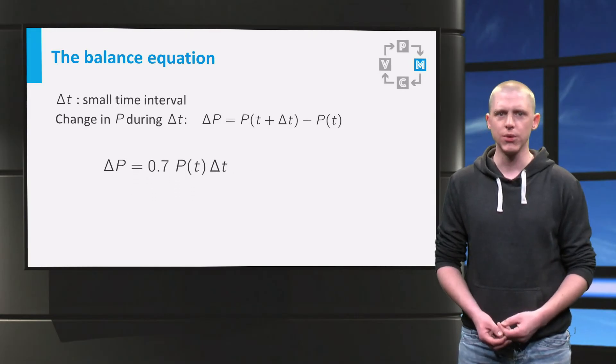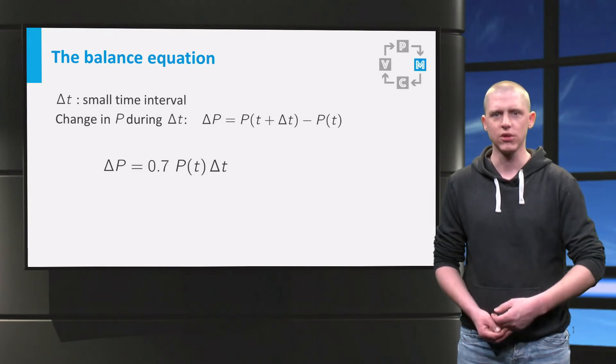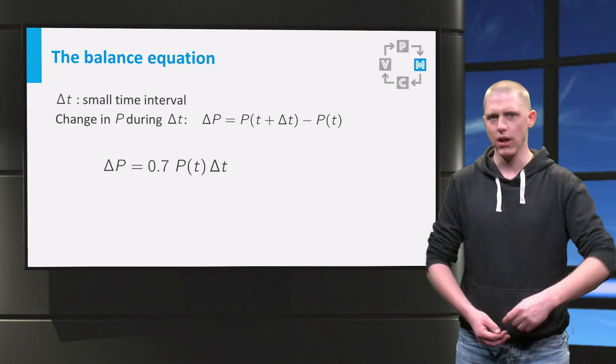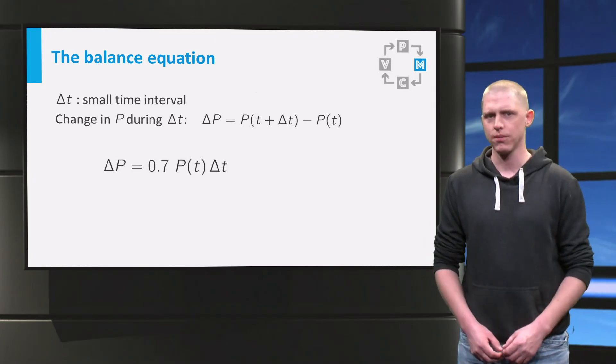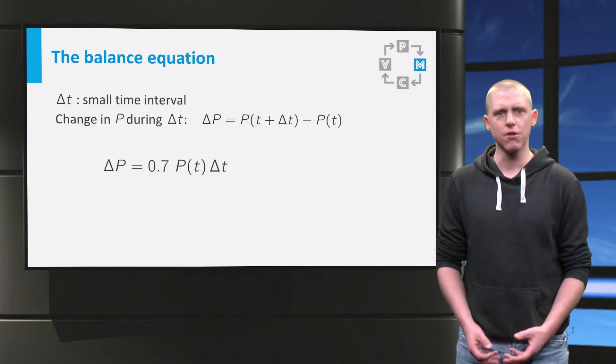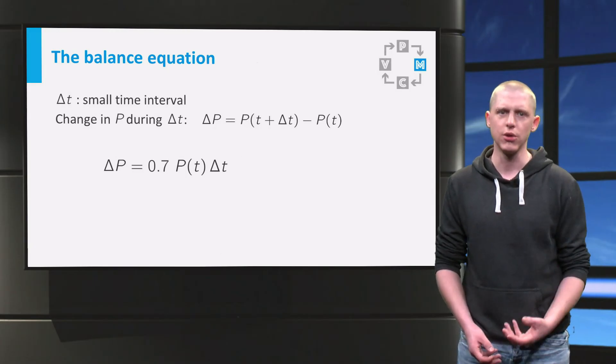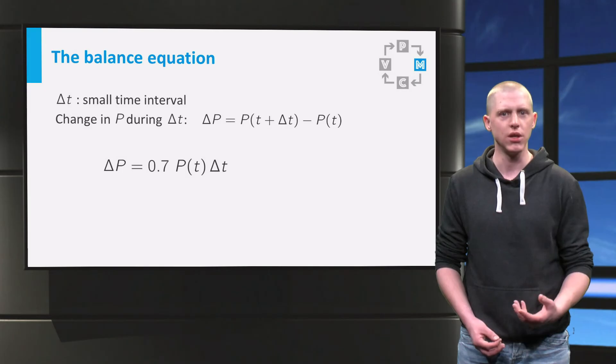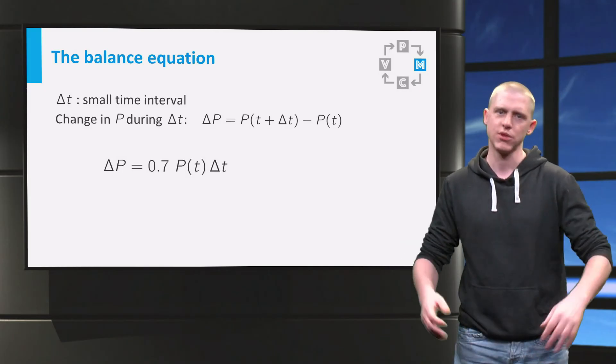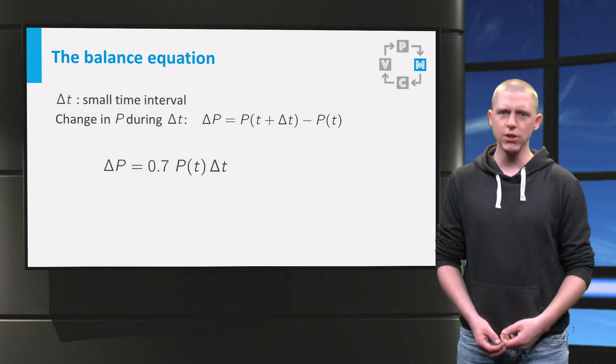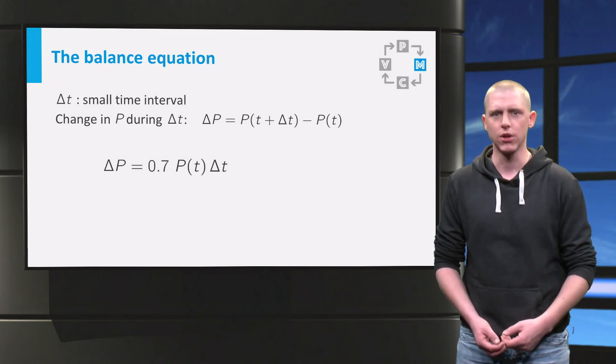Note that on the first day we start with 30 fish. So then delta P equals 0.7 times 30 times delta t. But in later moments the population has changed, and P is something else. So the initial number of 30 fish is not used in the equation for delta P, the change in P. The balance equation is valid for all times. This balance equation forms the basis of our differential equation.